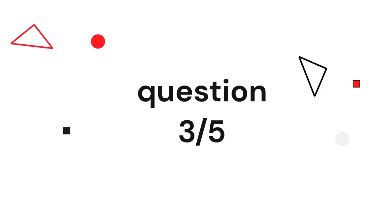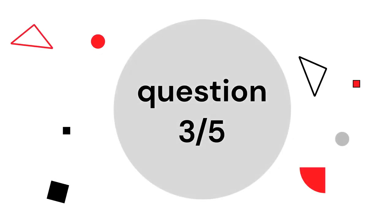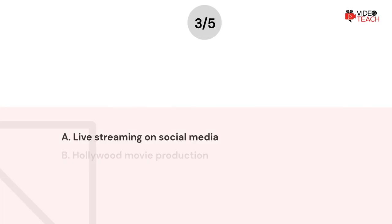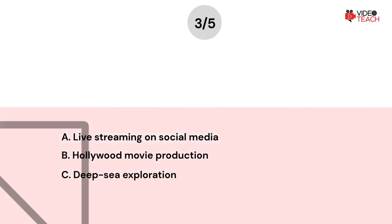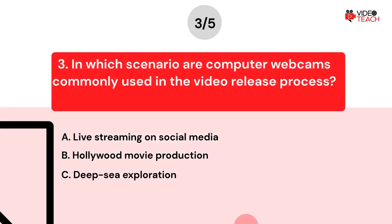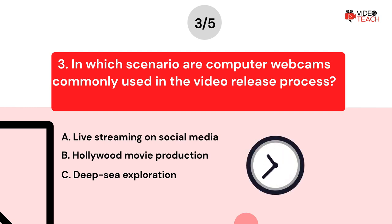Question number three. In which scenario are computer webcams commonly used in the video release process? Option A: Live streaming on social media. Option B: Hollywood movie production. Option C: Deep sea exploration. Now you have about 15 seconds to think about your answer.